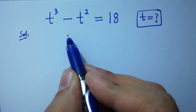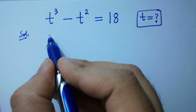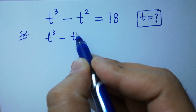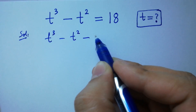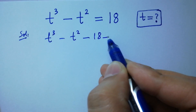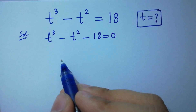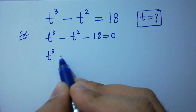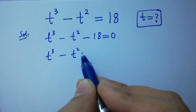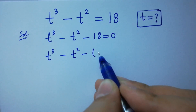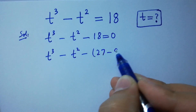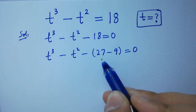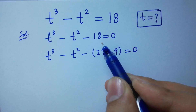It can be written as t cube minus t square minus 18 equal to 0, which is the same as t cube minus t square minus 27 minus 9 equal to 0. Since 27 minus 9 is 18.